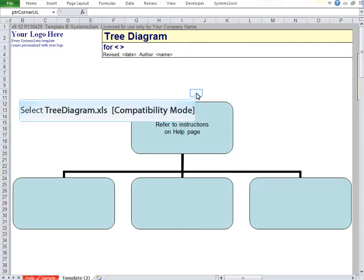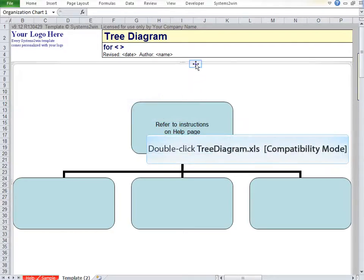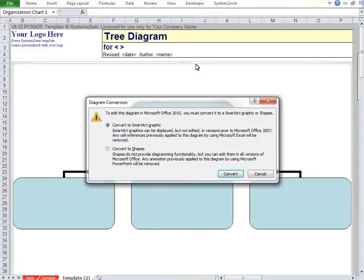First we click anywhere on the graphic to select it, then we double-click that thick border edge, which brings up this window that allows us to convert our backward compatible graphic into a SmartArt graphic.